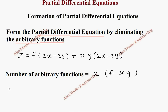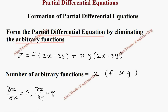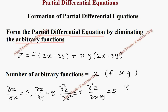So we are going to use dou z by dou x, which is p, then dou z by dou y, which is q, and dou square z by dou x square, which is r, then dou square z by dou x dou y, which is s, then dou square z by dou y square, which is t. We use all these things to eliminate the arbitrary functions.